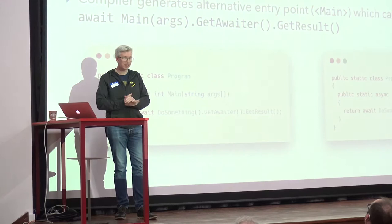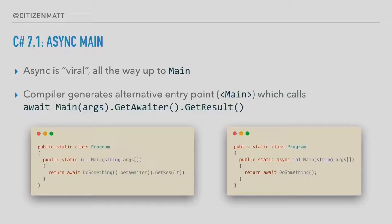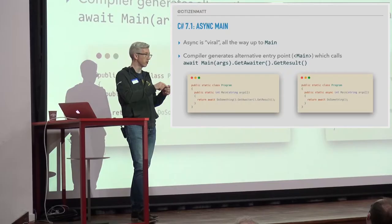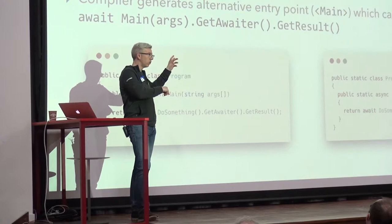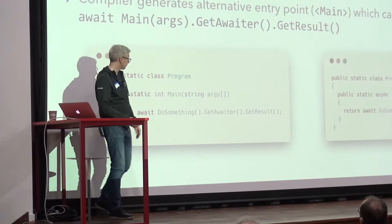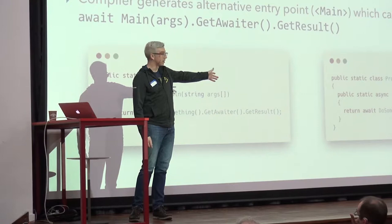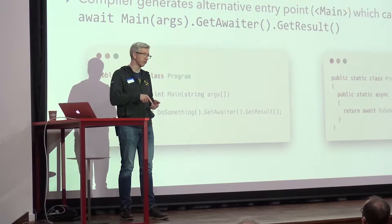If you've written any async code, you'll realize it kind of goes viral. If you want to await a particular async method, you have to mark your own method as async, and if somebody wants to call you they have to use await and mark their method as async, all the way up to main. You end up writing boilerplate: do something, get a waiter, get results. This feature lets you mark the main method as async, and behind the scenes the compiler generates an alternative entry point for you that simply calls that.